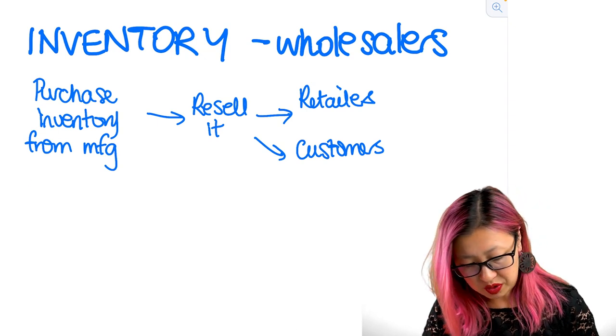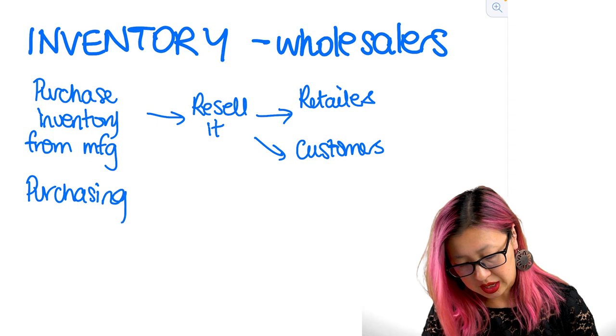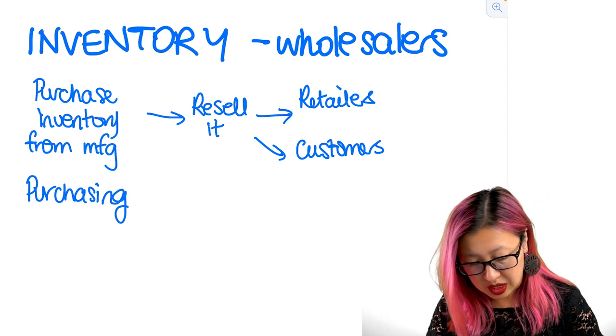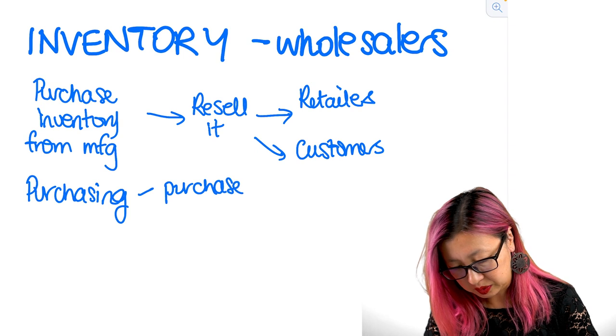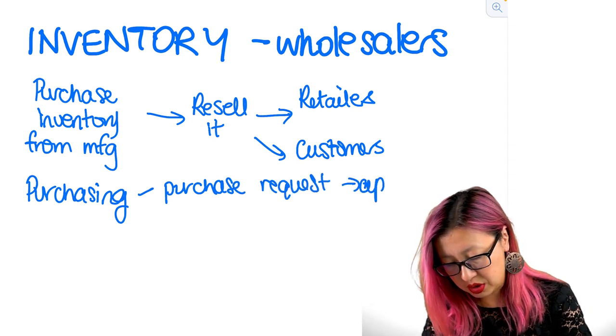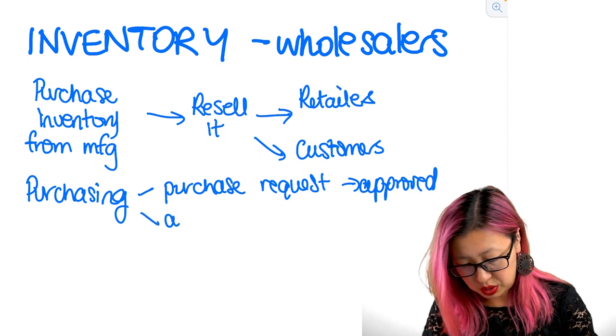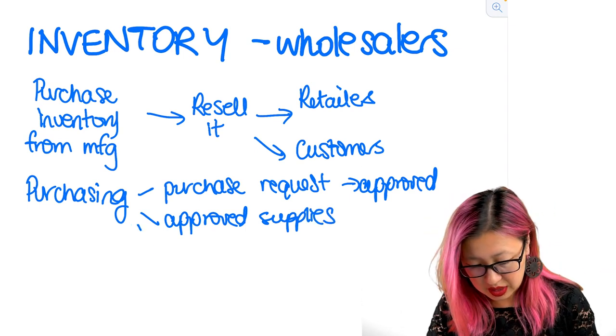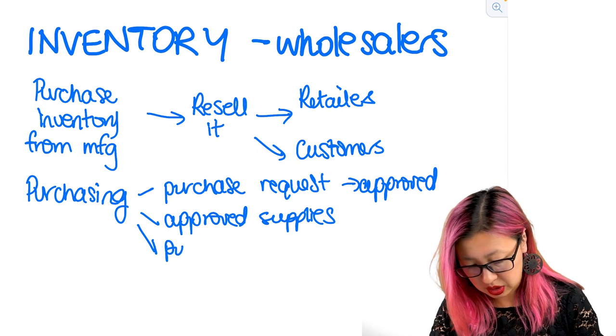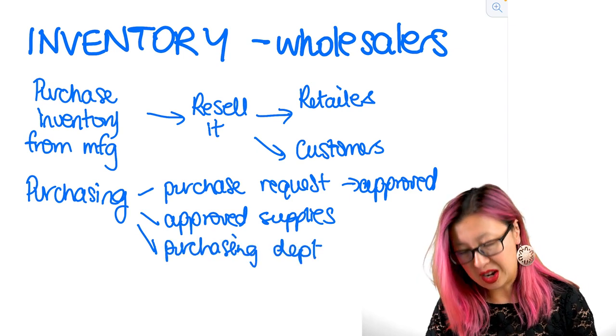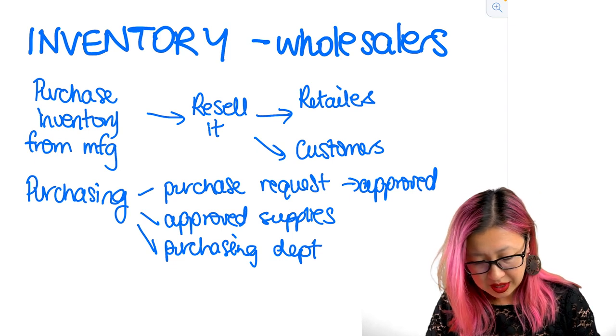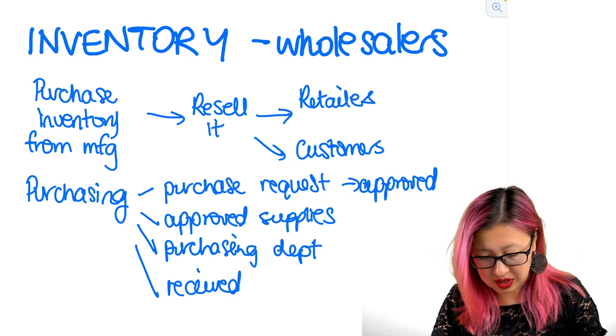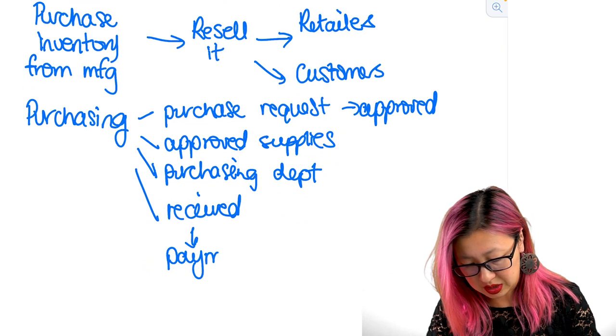So in terms of looking at the controls here, controls really come from the controls over the purchasing process. Around the purchasing there needs to be some sort of purchase request that usually needs to be approved. Normally then there will be approved suppliers. Often you might have a separate purchasing department that might do all of these types of ordering and other types of tasks associated with purchasing. Then the goods have to be received by the client so they come to the warehouse. You have to check how many do we have, is this something that we've ordered, and then after that is going to be a process for payment.